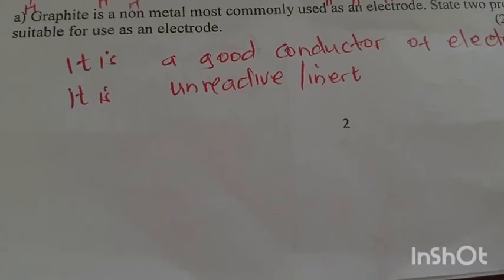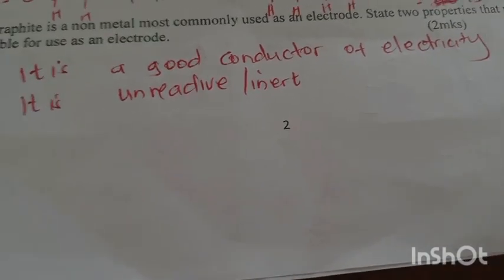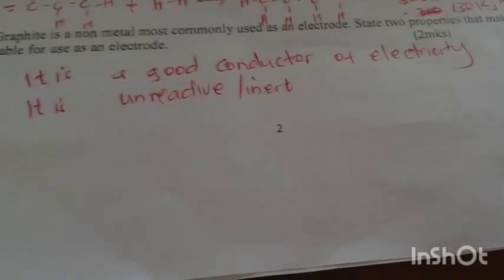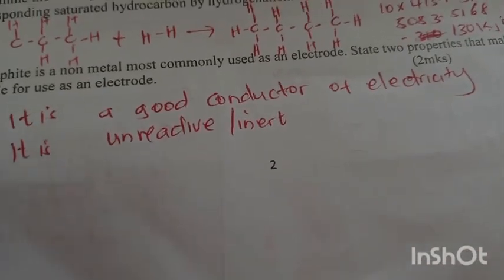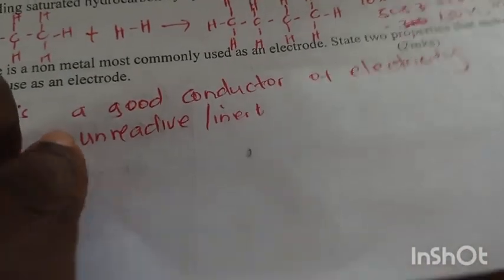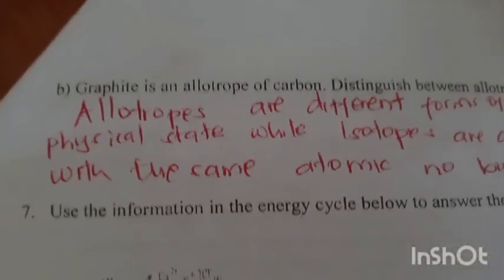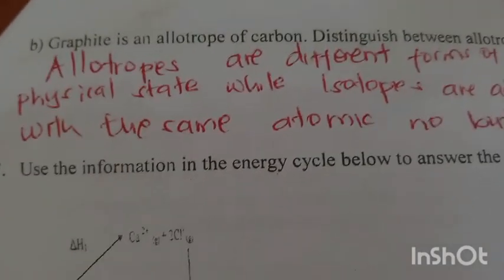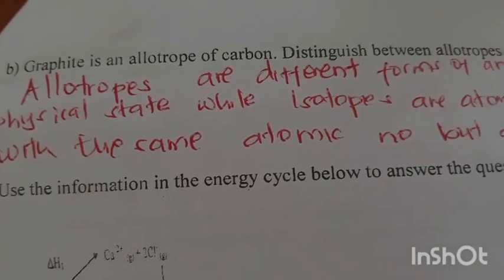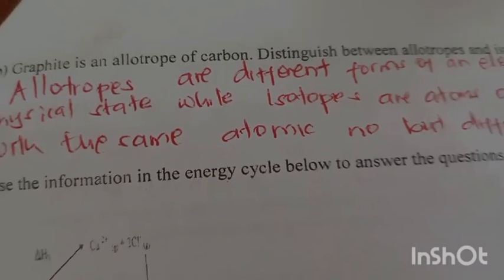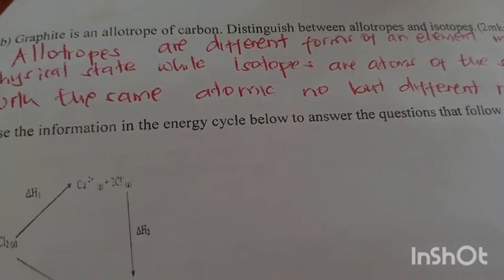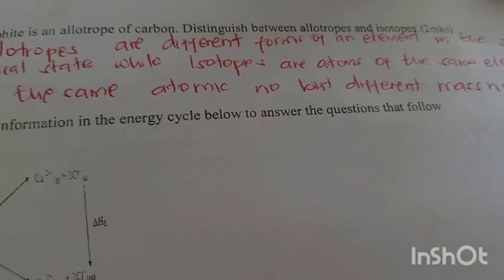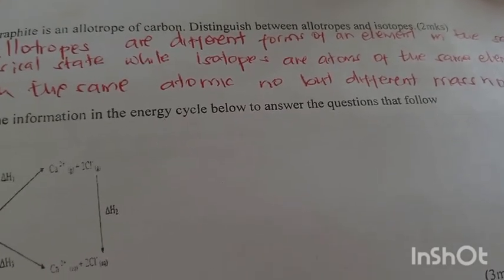Graphite is an allotrope most commonly used as an electrode. State two properties that make it suitable to be used as an electrode. It is a good conductor of electricity and it is also unreactive or inert. Distinguish between allotropes and isotopes. Allotropes are different forms of an element in the same physical state, while isotopes are atoms of the same element with the same atomic number but different mass number.